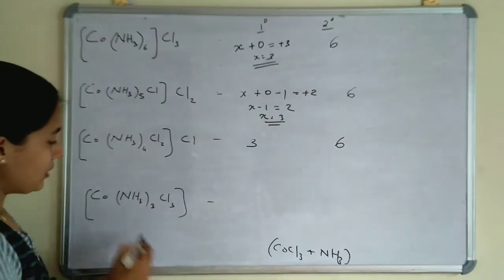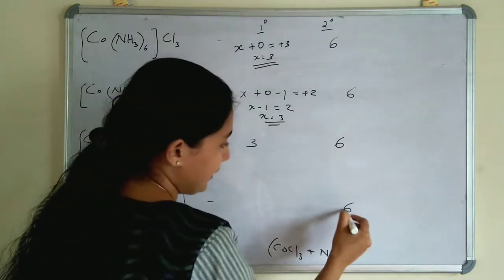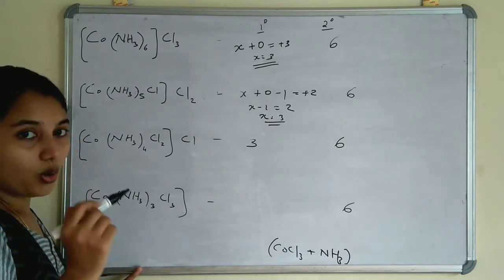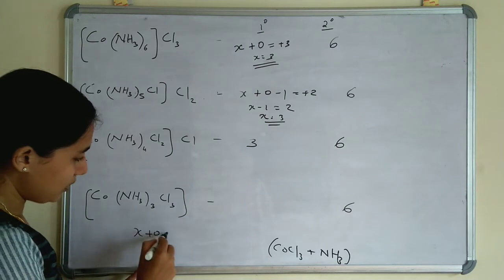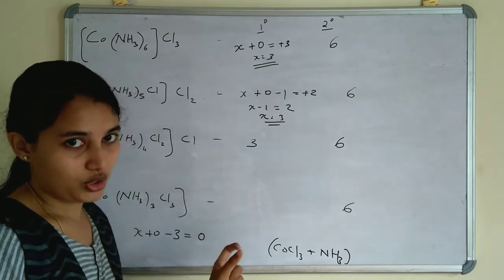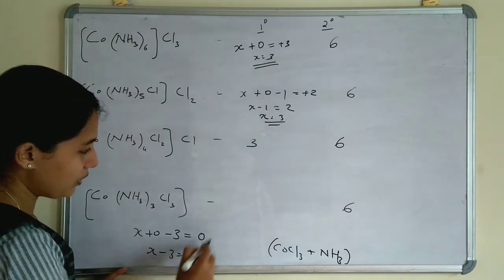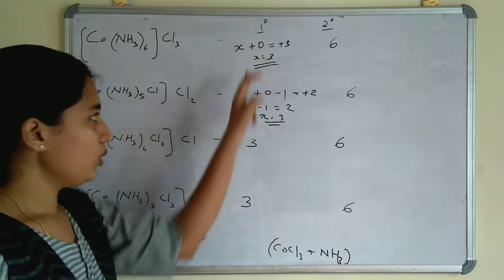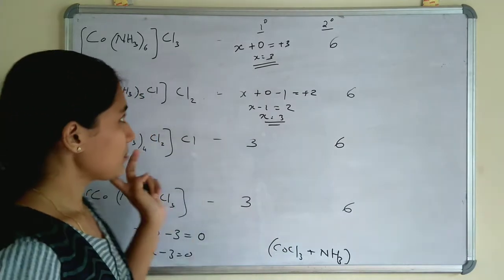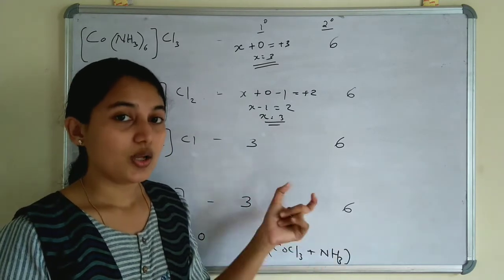In the fourth example, Co(NH₃)₃Cl₃: in the coordination sphere 3 + 3 = 6, so secondary valency is 6. For primary valency: X + 0 − 3 = 0, since this is a neutral coordination compound with no charge, X − 3 = 0, so X = 3. In all four compounds, the primary valency is 3 and the secondary valency is 6. Primary valency is ionisable and secondary valency is non-ionisable.